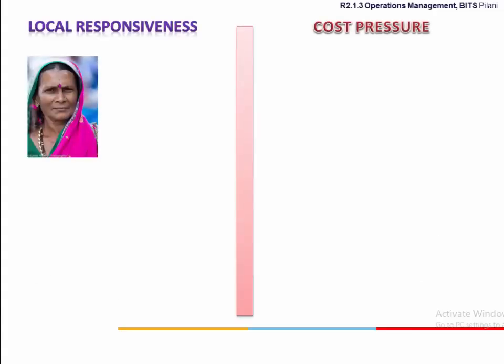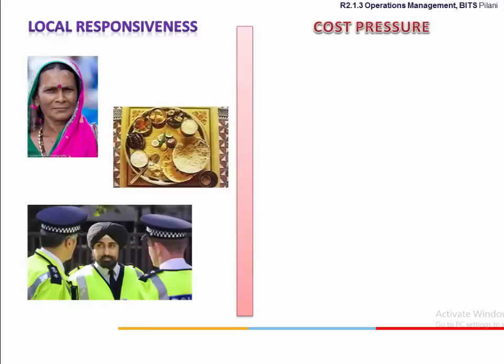Regional beliefs, practices and preferences influence local responsiveness. For example, a seafood joint in a town dominated by the Jain community is not a great way of responding to the regional preferences.